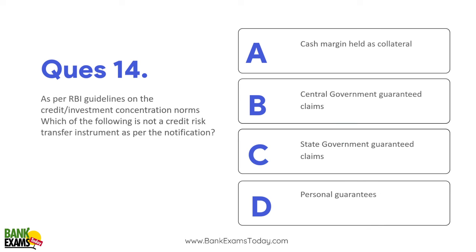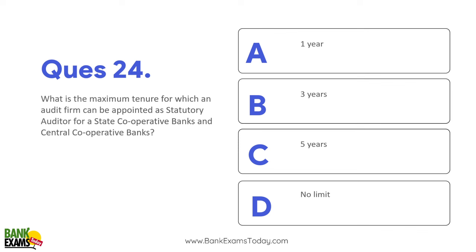As per RBI guidelines on credit investment concentration norms, which of the following is NOT a credit risk transfer instrument? Credit risk transfer instrument - personal guarantees nahi hai. Baaki state government guarantee claims, central government guarantee claims, cash margin held as collateral - yeh sare credit risk transfer instruments hai.